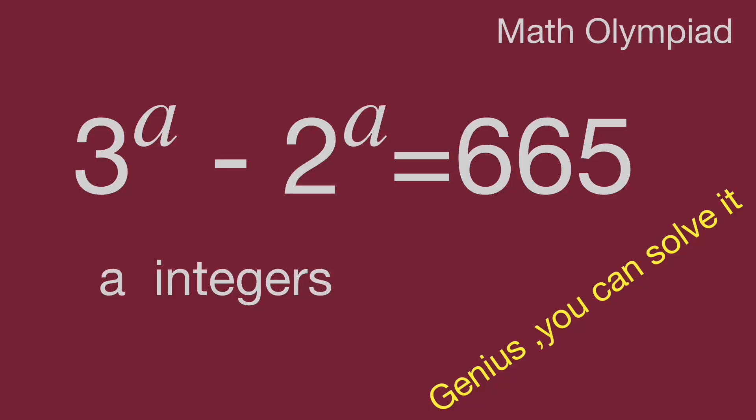Hello, you are watching Bala Hippo math genius videos. The question is: 3 power A minus 2 power A equals 665. A is an integer. Find the value of A. In this video we share our math logic to solve these interesting questions.